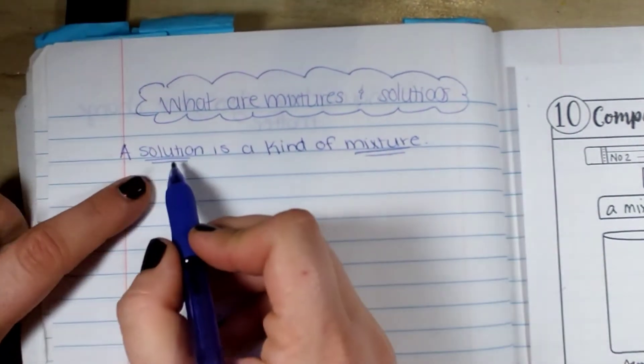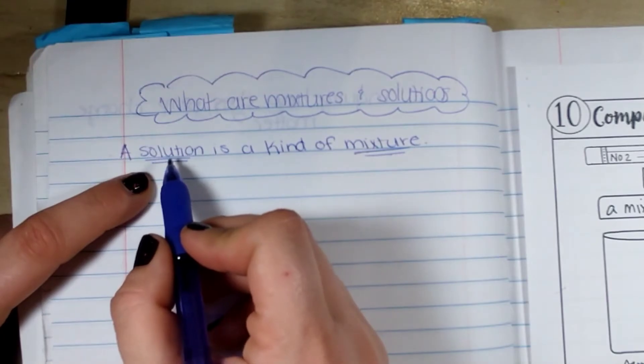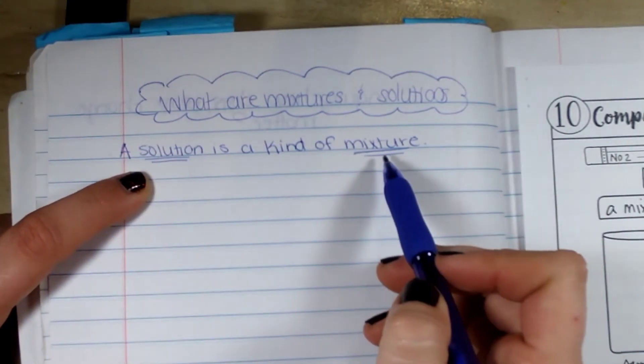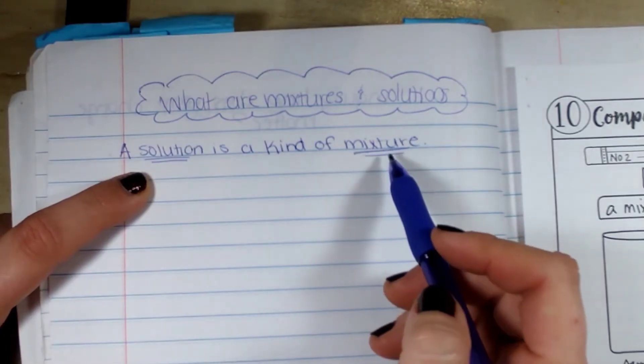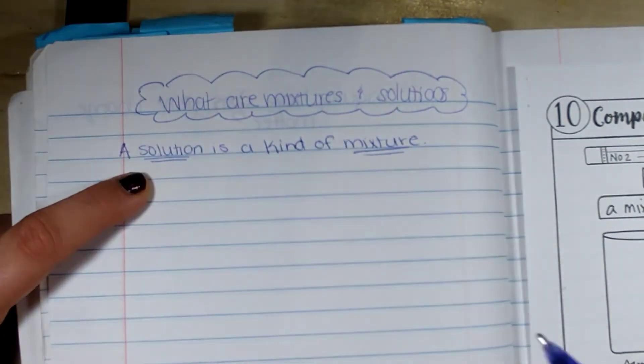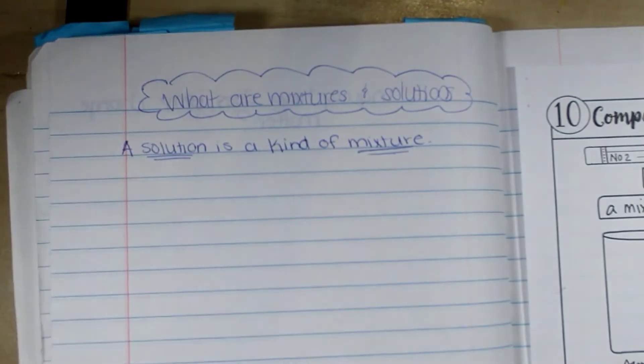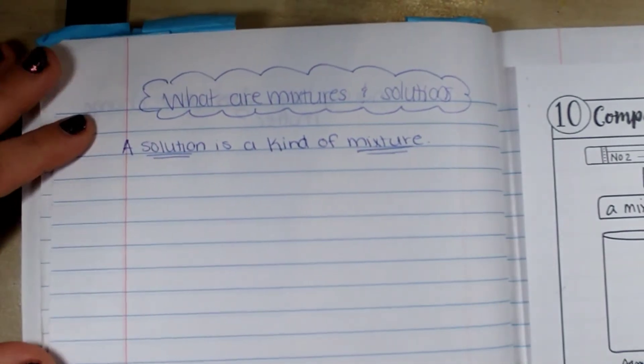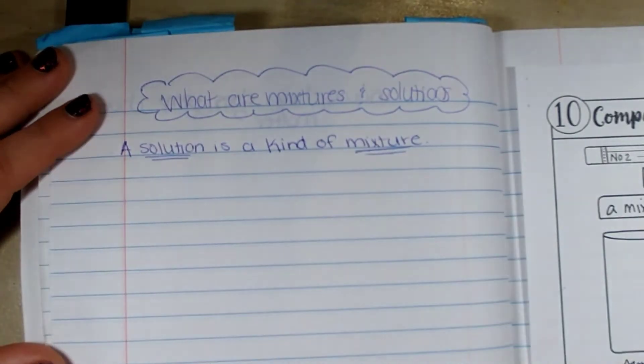Everything's a mixture, it's just a solution is a specific mixture, just like a rectangle is a kind of parallelogram but a square is a specific kind of rectangle. That's kind of an example for that. So we're going to talk about mixtures first because all of them are mixtures overall.